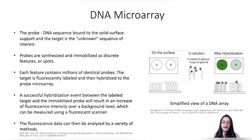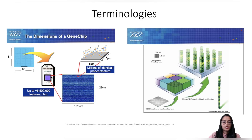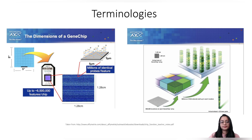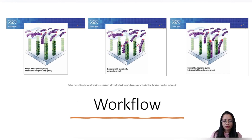Today we will be using data generated with the Affymetrix GeneChip, a commercial microarray platform commonly used to genotype human samples and create gene expression profiles. The Affymetrix GeneChip consists of a 5-inch by 5-inch glass wafer containing smaller squares called chips, each with dimensions of 1.28 by 1.28 centimeters. Each chip consists of over 6.5 million features — minuscule squares at each of which millions of identical probes are immobilized.